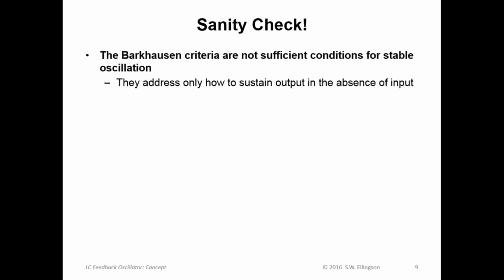So let's just do a little sanity check here. The Barkhausen criteria are not sufficient conditions for stable oscillation. Simply having some structure that satisfies the Barkhausen criterion just says that you have this possibility of having output without having input. In other words the Barkhausen criteria address only how to sustain output in the absence of input which is something we would like from a one port oscillator. Barkhausen criteria say nothing about the presence or absence of oscillation.